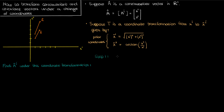The first step is to identify the relevant transformation law for the tensor, or the vector in this case. Here because we have a contravariant vector, or a contravariant tensor of rank 1, the relevant transformation law is given by the following equation.